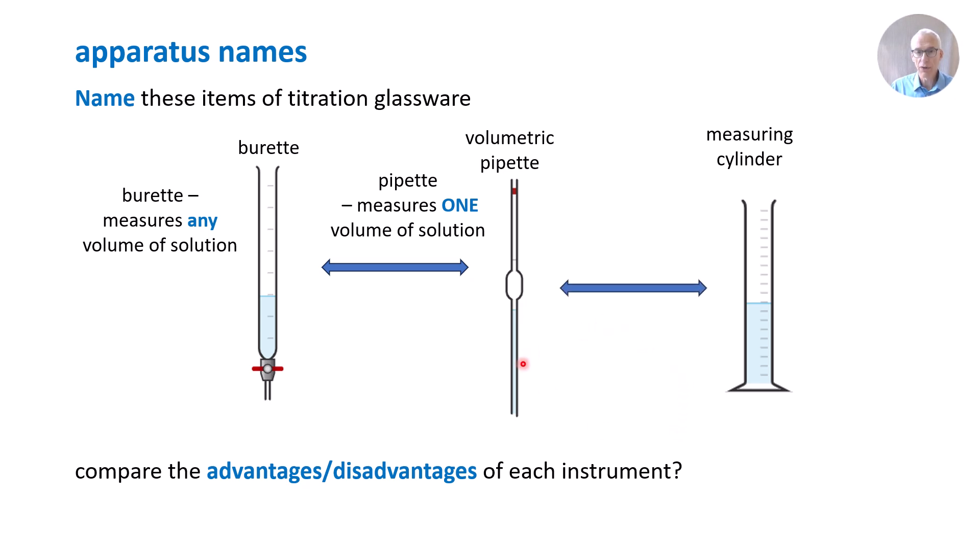What's the advantage of a volumetric pipette over a measuring cylinder? A measuring cylinder is much quicker to use, however, a volumetric pipette is much more accurate.